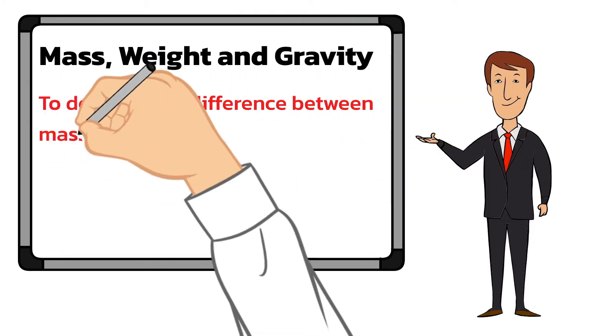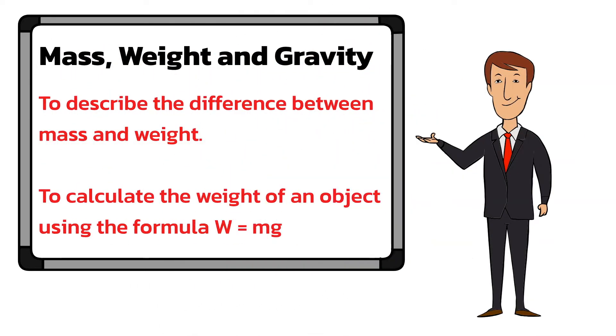By the end of the lesson you should be able to describe the difference between mass and weight, and calculate weight using the formula weight equals mass times gravitational field strength.